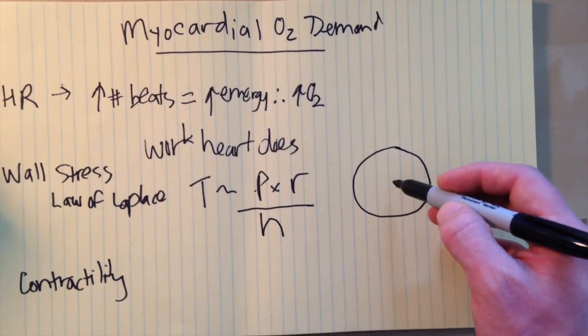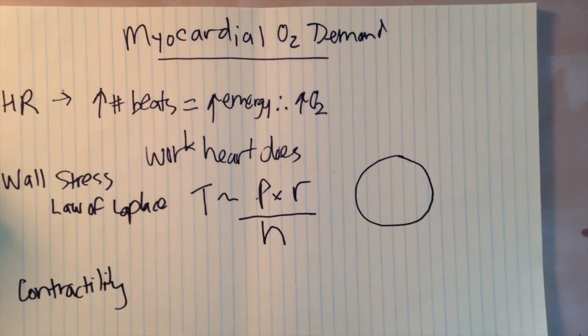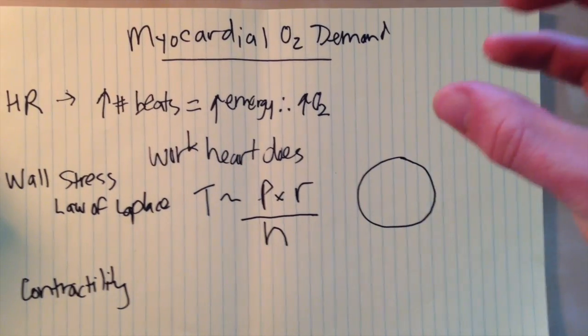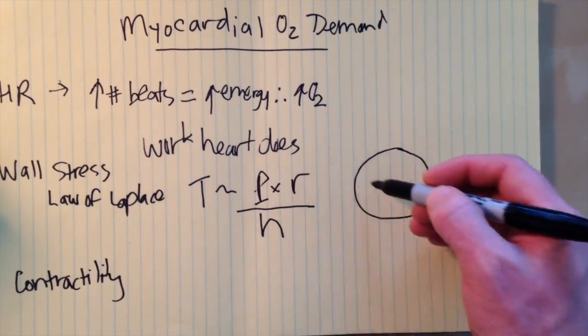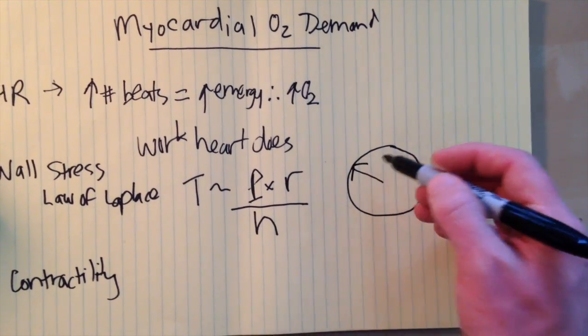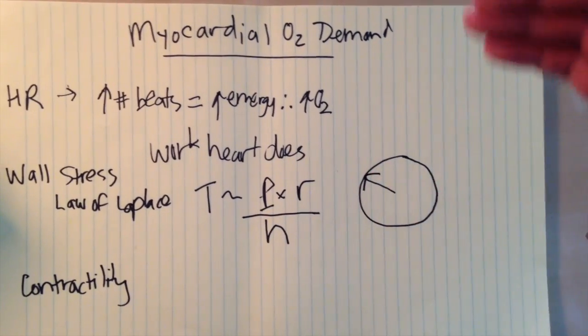So if the pressure is higher inside the circle you're going to have to do more work or the wall is going to have to work harder to squeeze that ventricle and squeeze that blood out. That's the pressure. So if there's increased pressure in here it's going to be exerting more pressure on that wall. That wall is going to have to squeeze harder, work harder to squeeze that blood out.